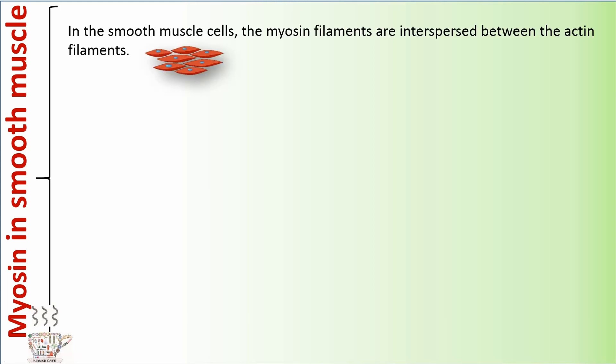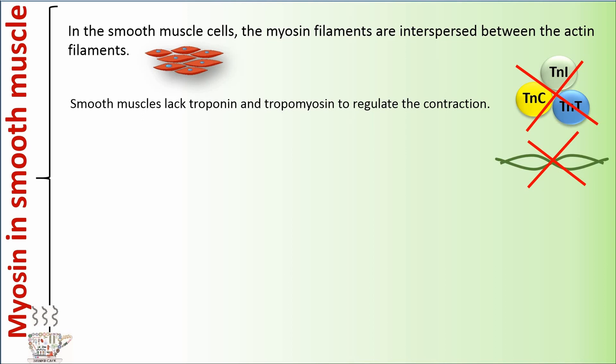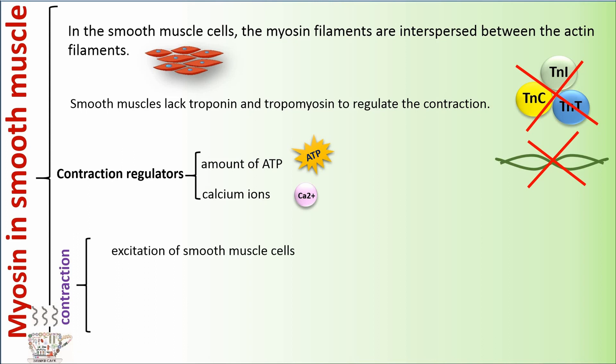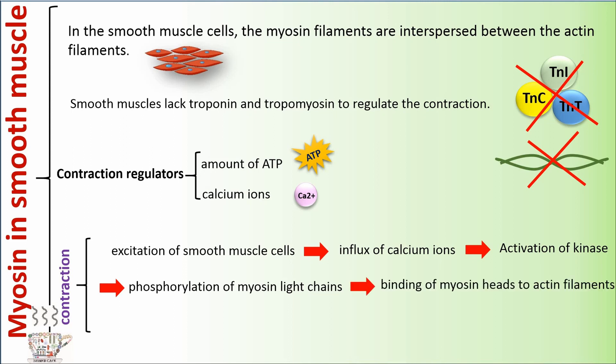In the smooth muscle cells, the myosin filaments are interspersed between the actin filaments. Smooth muscles lack troponin and tropomyosin to regulate the contraction. Contraction regulators of smooth muscles are amount of ATP and calcium ions. Contraction steps of smooth muscle: At first, excitation of smooth muscle cells creates influx of calcium ions and kinase activates. Then, phosphorylation of myosin light chains causes binding of myosin heads to actin filaments. Finally, we have contraction of smooth muscle.